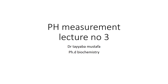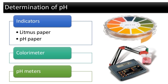Bismillahirrahmanirrahim. pH measurement, lecture number three. This is my third lecture on physical chemical aspects of biochemistry. pH is determined by indicator colorimetric method and by electronic pH meter.